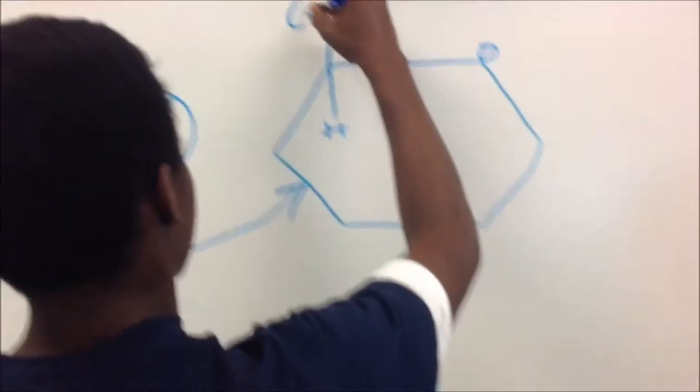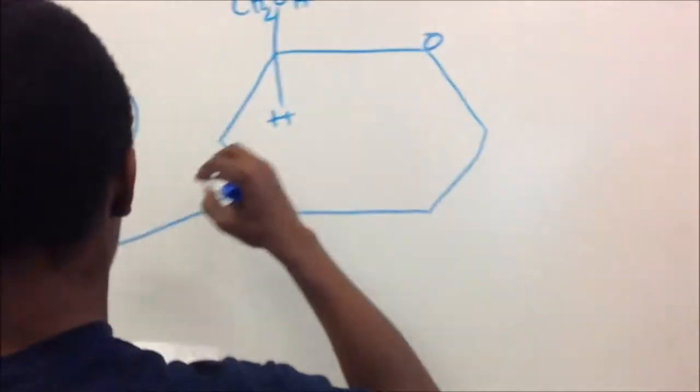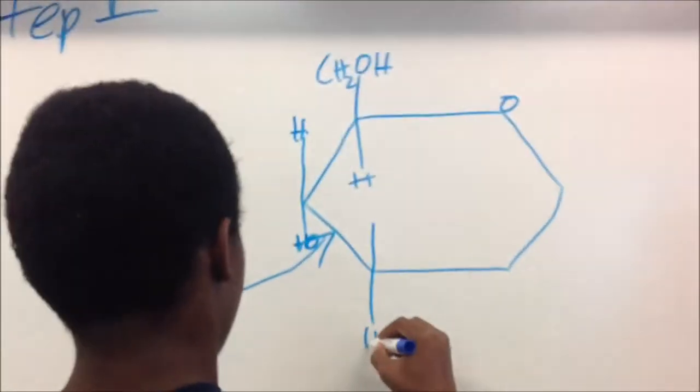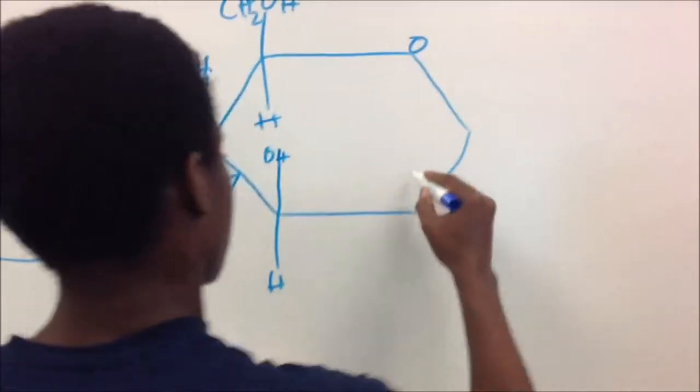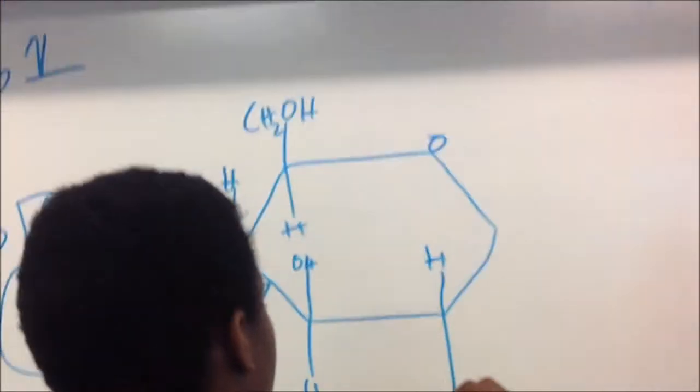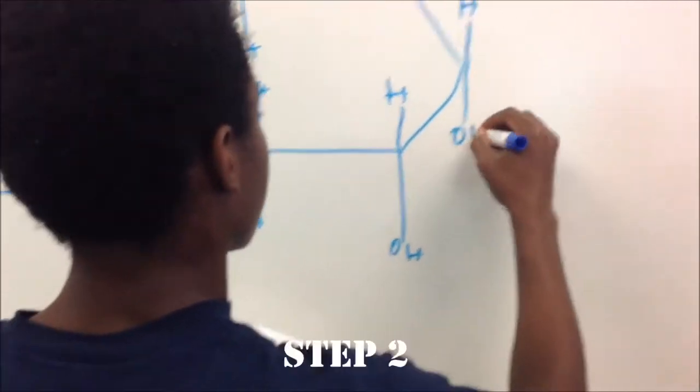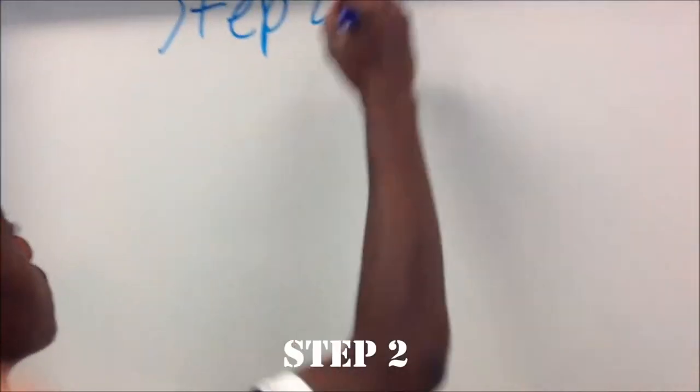Glucose is made out of 6 carbon molecules, 12 hydrogen molecules, and 6 oxygen molecules. It's in the crust of the pizza.